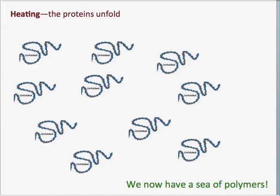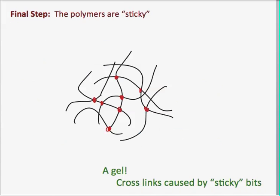And when they unfold, it so happens that you expose little bits of the proteins that were sticking to each other, which were sticking each protein to itself, which instead caused them to stick to each other. And that forms a network of cross-links, which then is a solid.